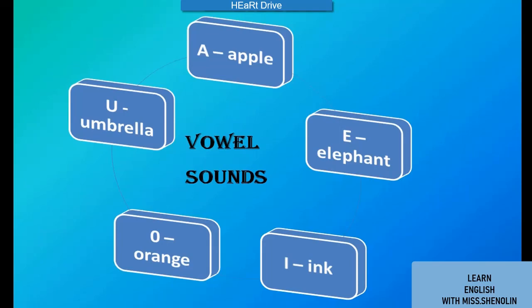I — ink, the sound of 'i' is 'i.' O — orange, the sound of 'o' is 'o.' U — umbrella, the sound of 'u' is 'u.' So we have to concentrate on the vowel sounds.